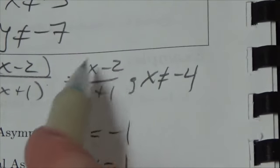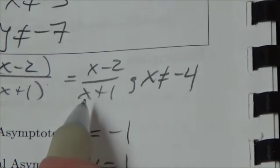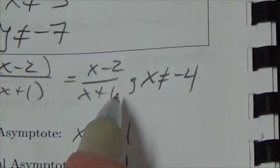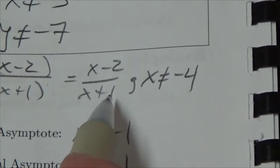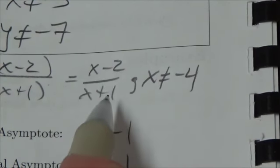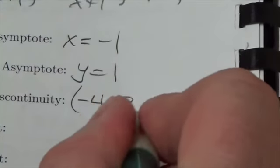So negative 4 minus 2 would be negative 6. Negative 4 plus 1 is going to be negative 3. And so negative 6 divided by negative 3, the answer here is that that y-coordinate is going to be positive 2.